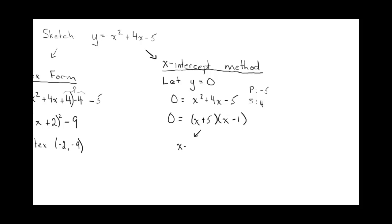And the answer there would be plus 5 and negative 1. So these two brackets multiplied to give you 0. Which means x is equal to negative 5.